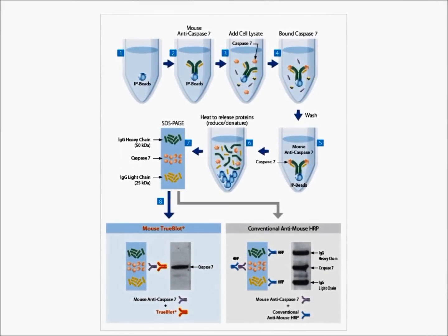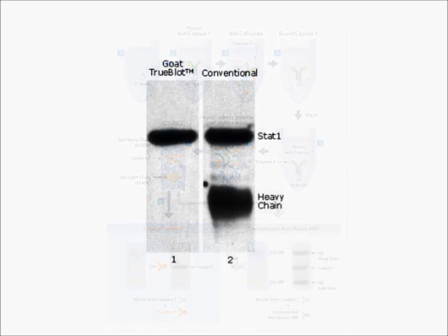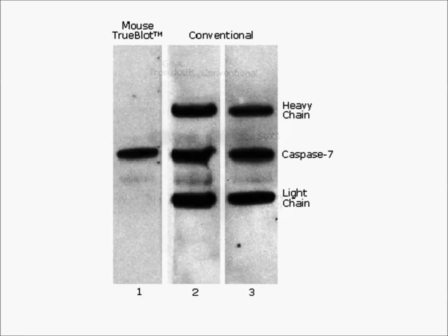Trueblot reagents have the ability to specifically detect the native 3D structure of antibodies. Peroxidase conjugated Trueblot allows for a clean Western blot free of unwanted bands.